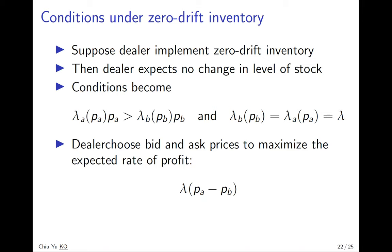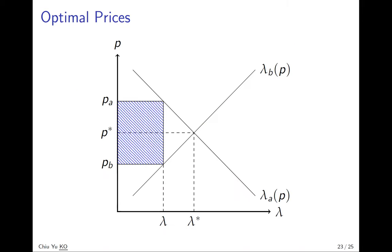So look at it graphically. Remember the downward sloping demand lambda A and the upward supply lambda B. In the absence of a dealer's market, in a competitive market, the market clears at P star and lambda star.